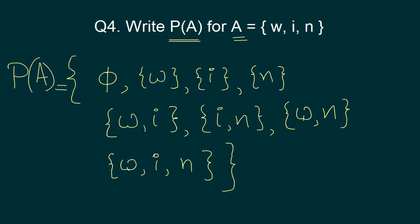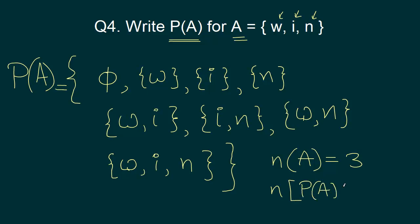Also remember there is a formula to find out the number of subsets possible for any given set. In this case, the set has 3 elements, so the number of elements of A is 3. The number of elements of the power set P(A) — in other words, how many possible subsets are there — will be 2 to the power 3, which is 8. This formula gives us the count of how many subsets are possible, not the subsets themselves.